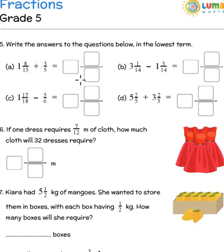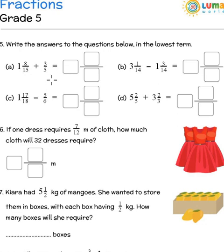The next one: 1 and 8 by 15 plus 3 by 5. Remember you need to convert it into like fractions so that you are directly able to add. So 3 by 5 has to be converted, which makes it 9 by 15. So when I add 1 and 8 by 15 plus 9 by 15, I get 1 and 17 by 15. It becomes an improper fraction, so I convert 17 by 15 as 1 whole and 2 by 15 — I already have 1 whole here — which makes it 2 whole and 2 by 15.